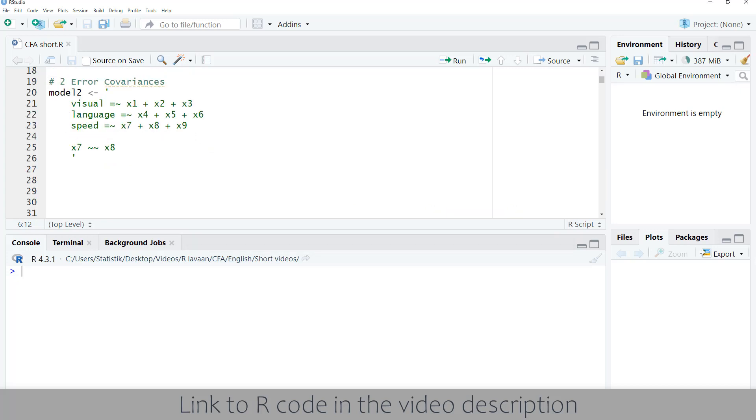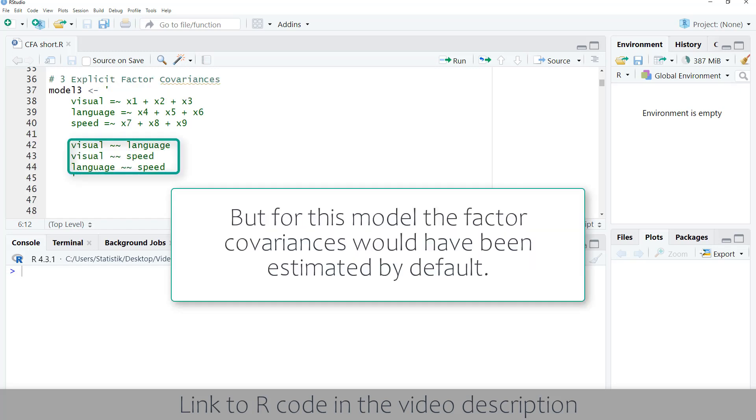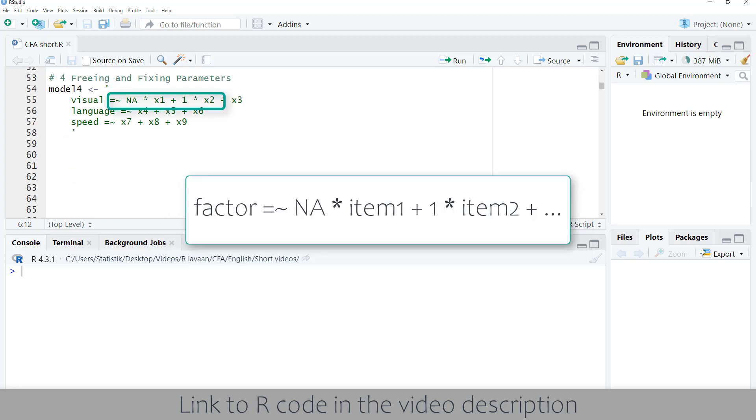In addition to that, we can specify error covariances between items with a double tilde. We can explicitly model factor covariances, again using the double tilde, and we can free and fix parameters.